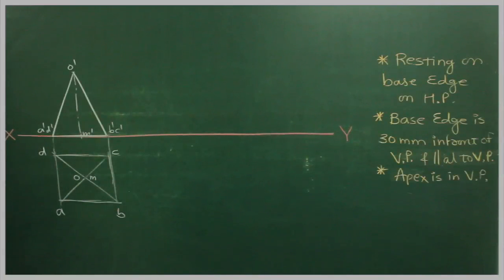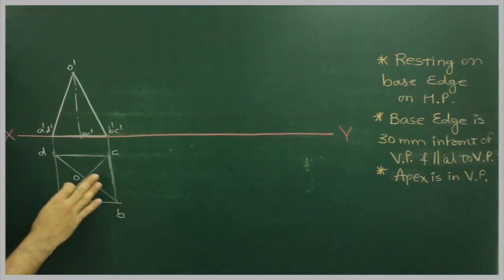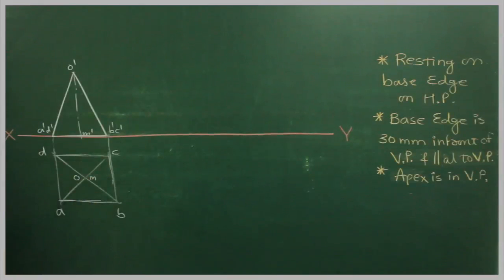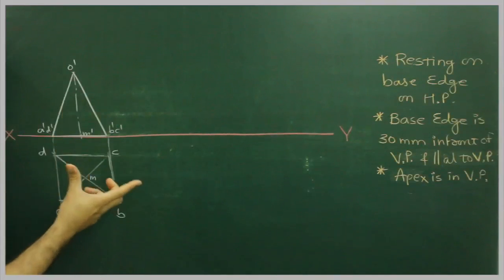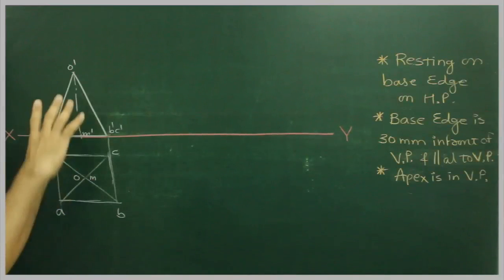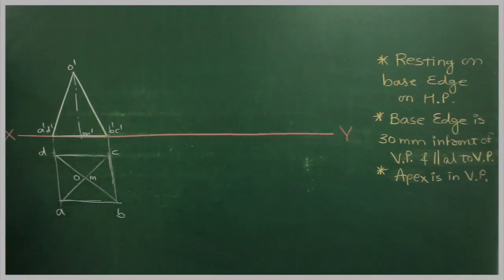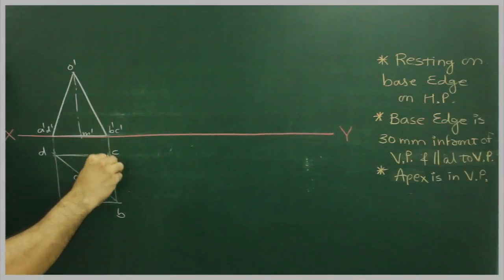Now we have it resting on HP. Generally when it is resting on HP, then the axis is perpendicular to HP. Now we are given the base edge is 30 mm in front of VP. So which base edge are they talking about?